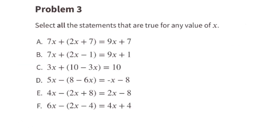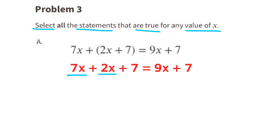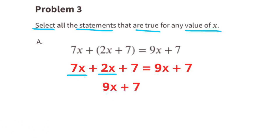Problem number 3. Select all the statements that are true for any value of x. Option A: a positive times a positive is a positive. We can rewrite this as 7x plus 2x plus 7 equals 9x plus 7. Combining the like terms on the left side, 7x plus 2x is 9x, leaving 9x plus 7 on both sides. So this statement is true for any value of x.